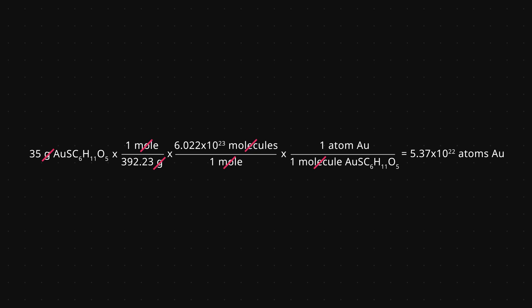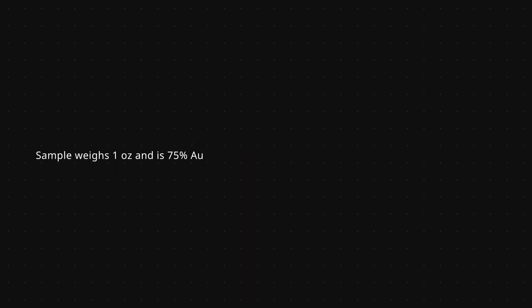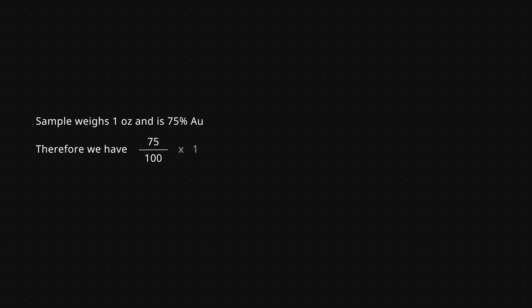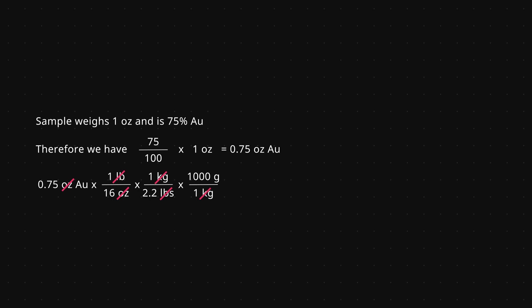Now let's calculate the number of atoms in one ounce of 18 karat gold. We use the same process but with different conversion factors. We start with one ounce that is 75% gold. Converting 75% to a decimal gives us 0.75 ounces of gold. We know there are 16 ounces in a pound and 2.2 pounds in a kilogram. Multiplying 0.75 ounces by one pound over 16 ounces gives pounds of gold, then by one kilogram over 2.2 pounds gives kilograms, and then by 1,000 grams over one kilogram gets us to grams of gold. We then convert grams to moles and moles to atoms.